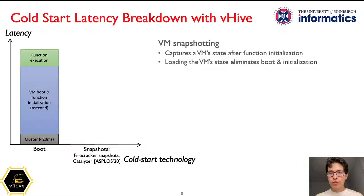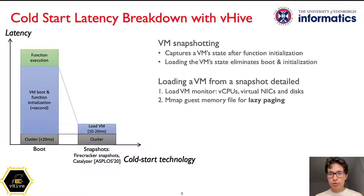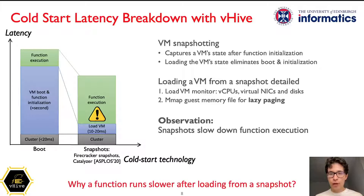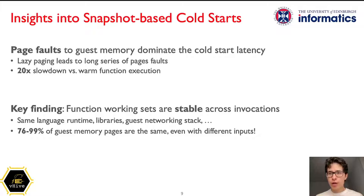To eliminate the dominant boot initialization fraction, researchers suggested capturing the state of a ready-to-serve VM in a snapshot. Then, when another invocation arrives and the worker is chosen, the hypervisor quickly loads a VM from a snapshot. It loads the state of the VM monitor and the emulated devices, and rapidly maps the guest memory file into the main memory for lazy paging. Although loading is much faster than booting, we observe that function execution becomes slower. We find that function execution slowdown is majorly due to the long series of page faults to the guest memory pages. Indeed, the guest memory file is mapped but not populated with the data.